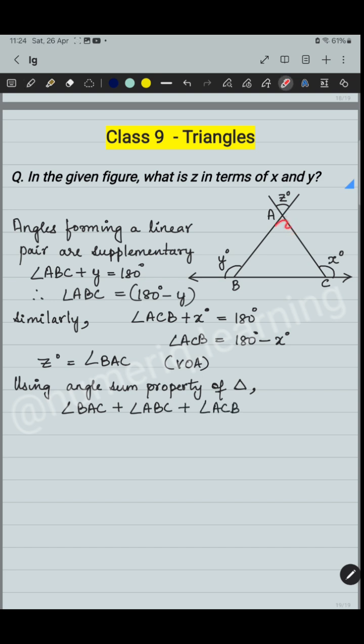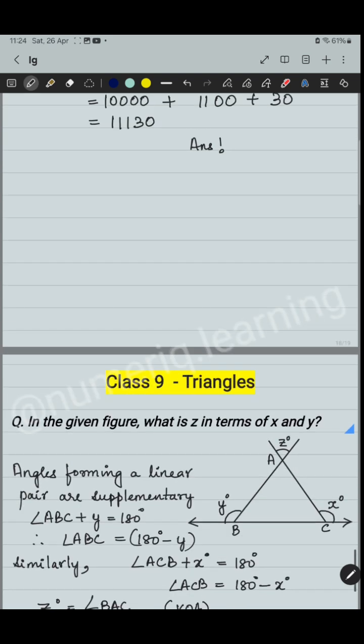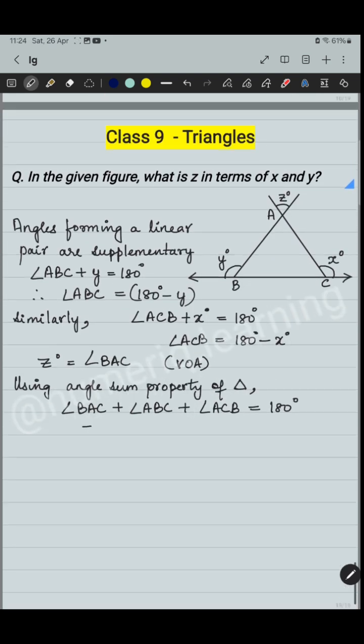Substitute all the three values. So instead of BAC, you can write Z. Instead of ABC, we write 180 minus Y. Angle ACB is equal to 180 minus X, which equals 180 degree.